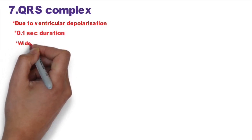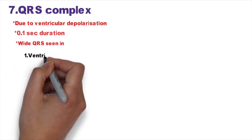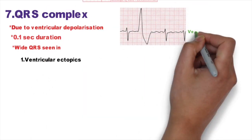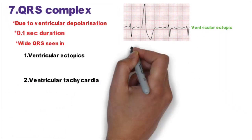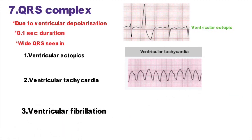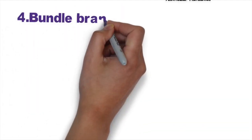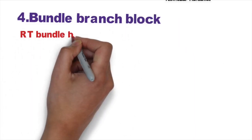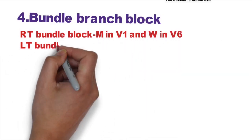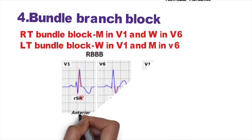If the QRS complex is more than 0.1 seconds wide, it can be due to ventricular ectopics, ventricular tachycardia, or ventricular fibrillation. QRS widening is also seen in bundle branch block. In right bundle branch block, there is an M-pattern QRS in lead V1 and a double-notch pattern in lead V6. In left bundle branch block, it is the opposite: double-notch pattern in V1 and M-pattern in V6.